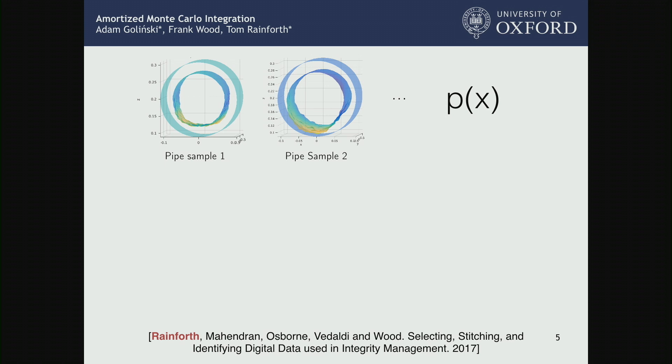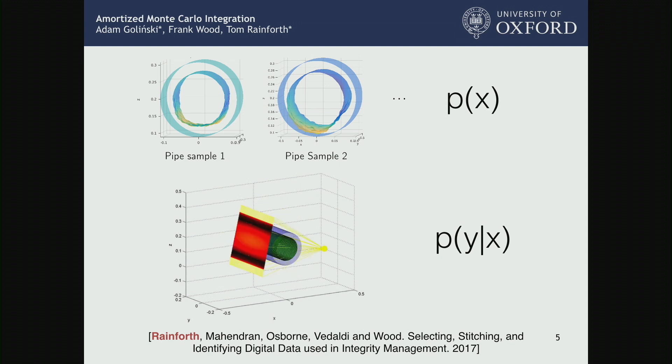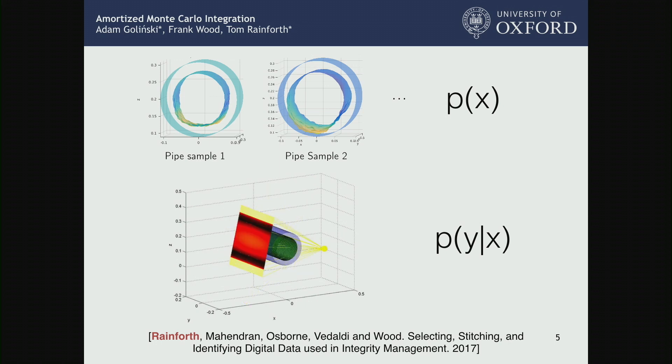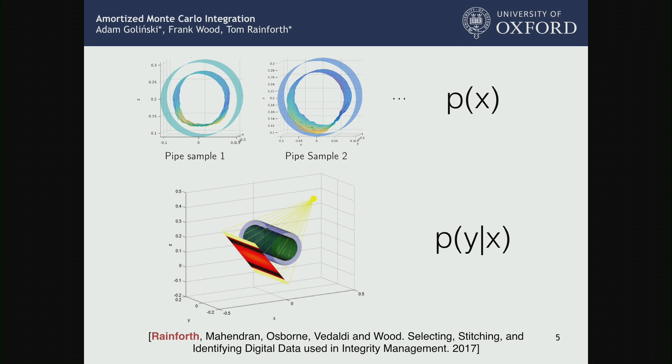This is a scenario where we have really strong prior information. We know a lot about what pipes we might see; we have experts who know how pipes corrode and write simulators for us. If we run those simulators, they give us geometries of pipes — effectively a distribution over pipe geometries, a prior over possible pipes we might see. Furthermore, we know a lot about first-principles physics: given a pipe geometry, we can run simulations using photon scattering and ray tracing to generate possible x-rays you'd see. Together, these give us a forward model, allowing us to generate possible sets of images.